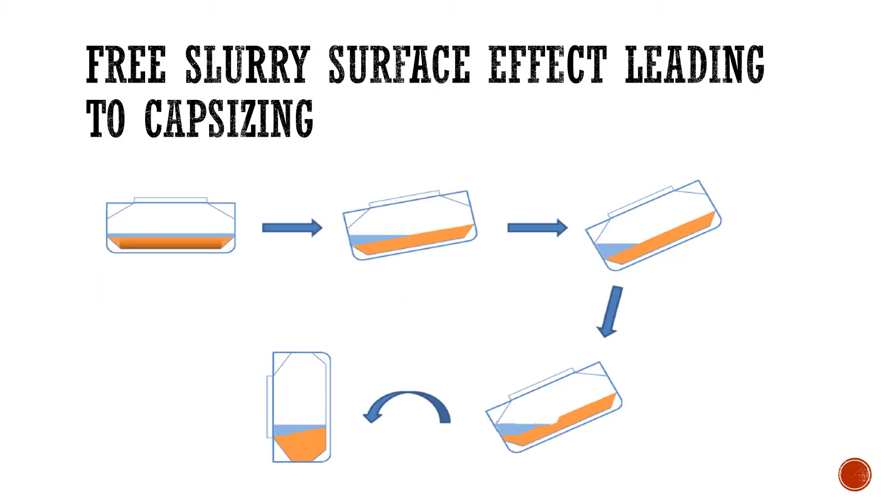Once listed, the vessel will still experience some rolling motions and the free slurry surface can erode the underlying competent solid cargo, causing it to be deposited to the lower side of the cargo hold that you can see here on your screen. This increases the list.